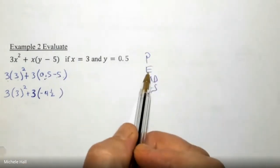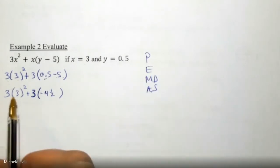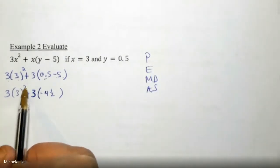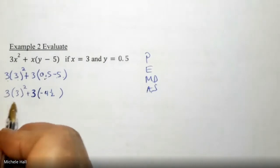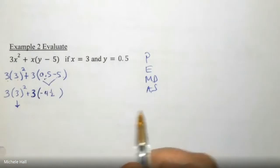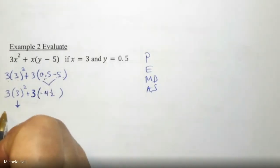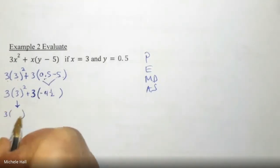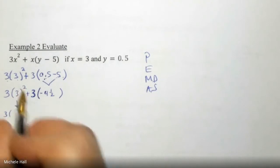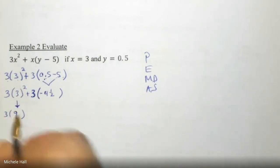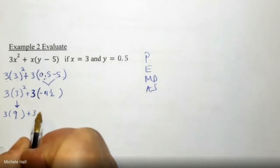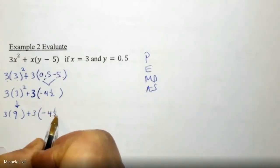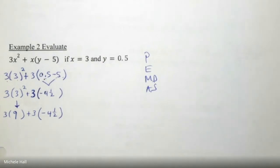After parentheses comes exponents. Here's my exponent: 3 squared. That's all I'm doing is this part. So I have 3 times 3 squared, 3 times 3 is 9. Then I have plus 3 times negative 4 and a half. Are there any other exponents? No.